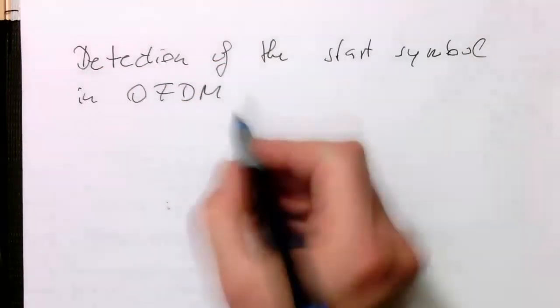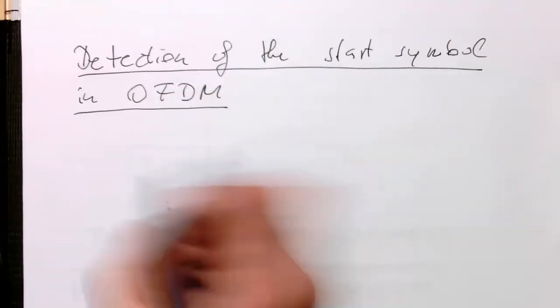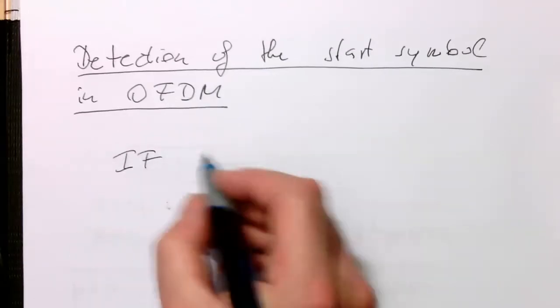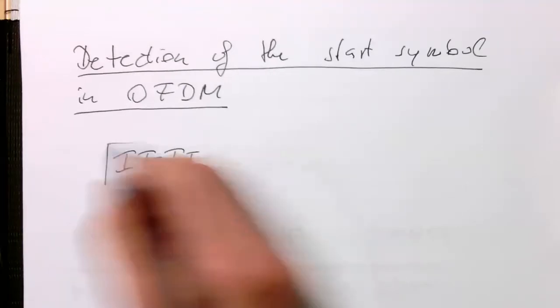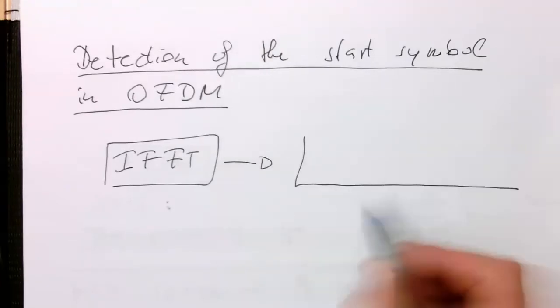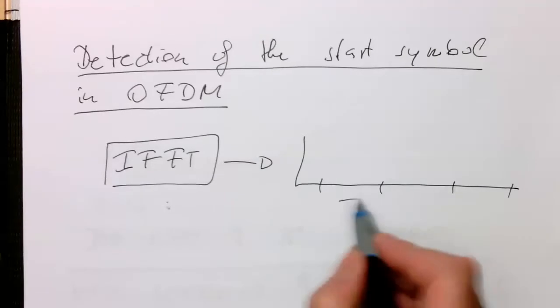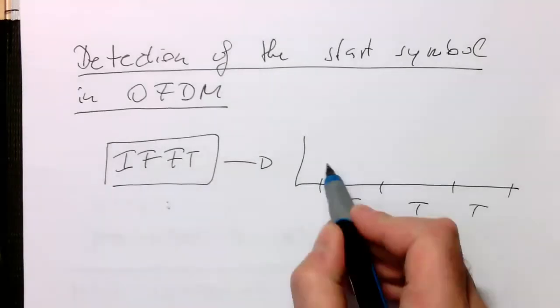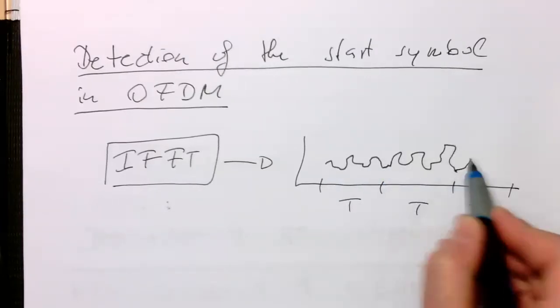Remember, the problem arises from the fact that our inverse Fourier transform, our IFFT, generates very complex symbols. Imagine these are our symbol durations here, and then maybe the first symbol looks like that, and then the next symbol looks like that, and the next symbol looks like that.